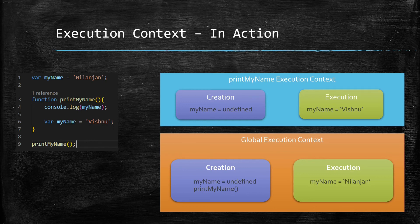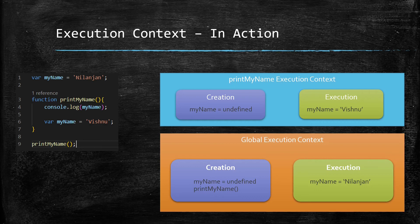Suppose we didn't have line six at all inside this function. In that case, on line four, when the scope chain looks for 'myName' inside the 'printMyName' function and doesn't find it, it would look up the scope chain to the global execution context. There it would find 'myName' with the value 'Nilanjan' already assigned, because the global execution context has already gone through its execution phase and assigned that value on line one.